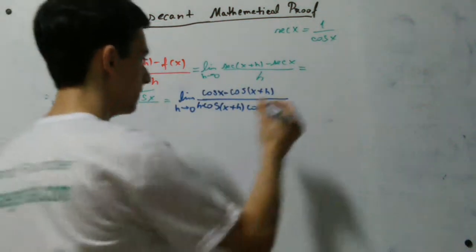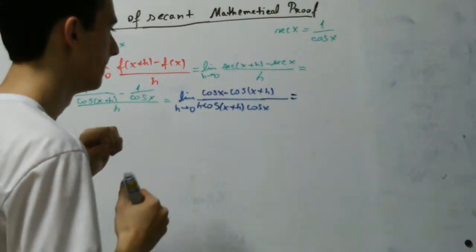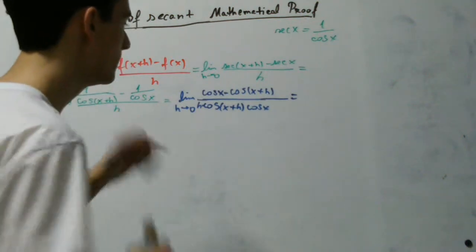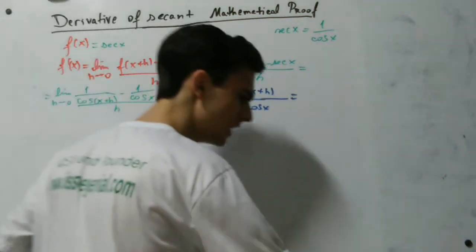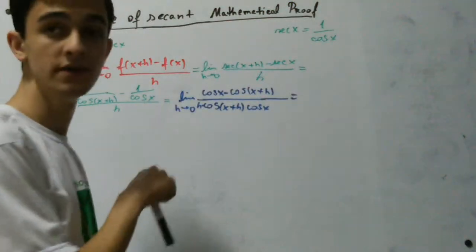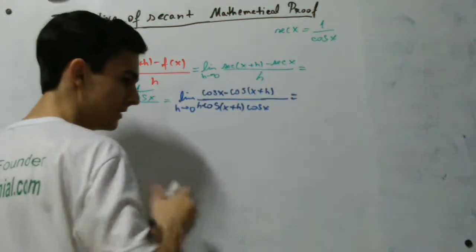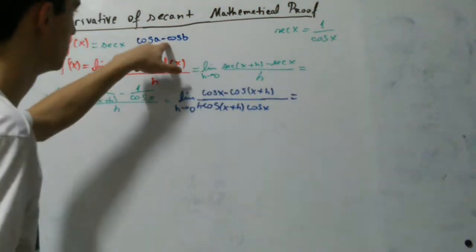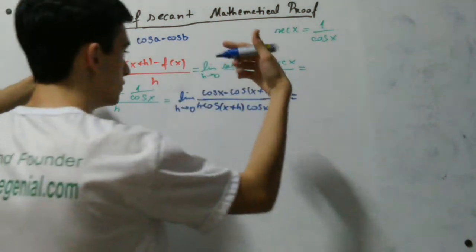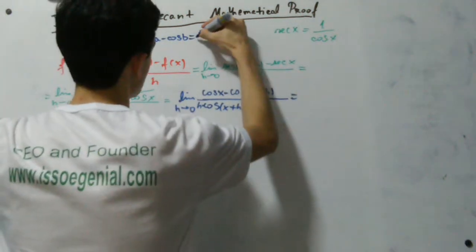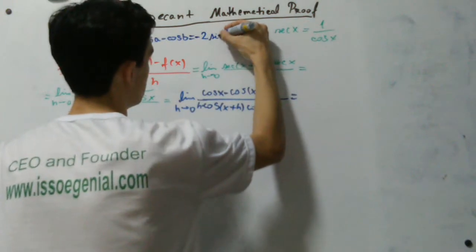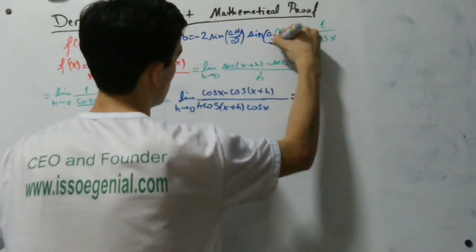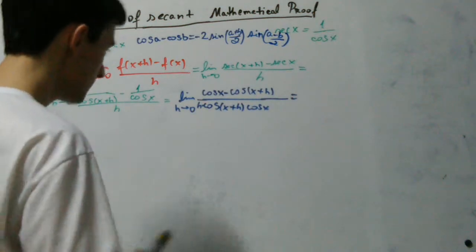Now we're going to remember a sum-to-product formula of trigonometry — a factorization equation we can use when we have the subtraction between two cosines. We have already used this equation when we proved the derivative of cosine of x. The equation is: cosine(a) minus cosine(b) equals negative 2 times sine of (a+b)/2 times sine of (a−b)/2.